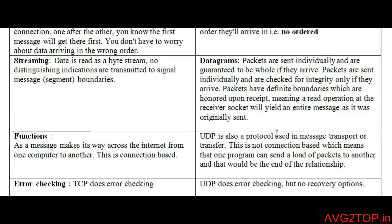Streaming: data is read as byte streams, distinguished by signal message segment boundaries. This means data is sent in terms of byte streams, where the whole message or file is broken into small segments or small packets, and then sent from source to destination. That is what streaming means in TCP.